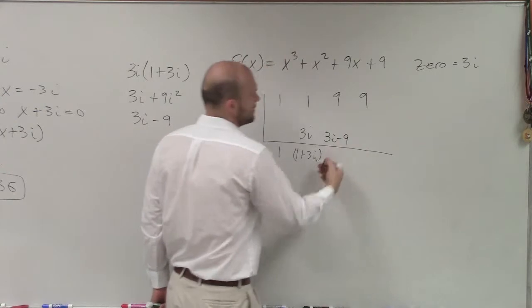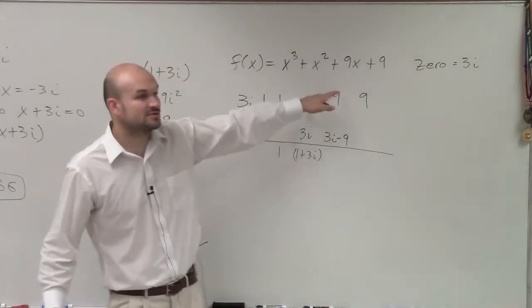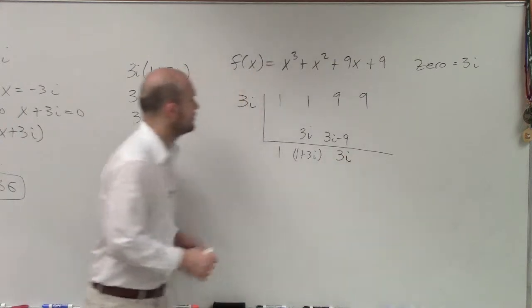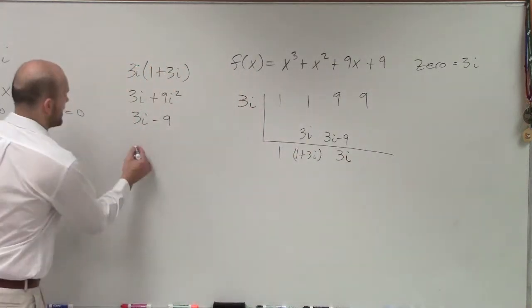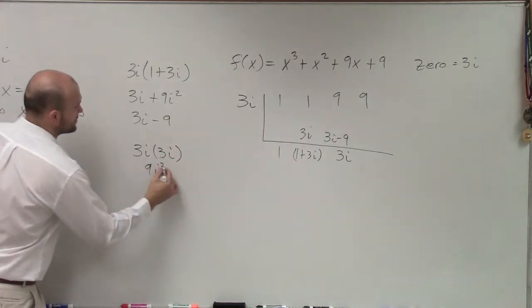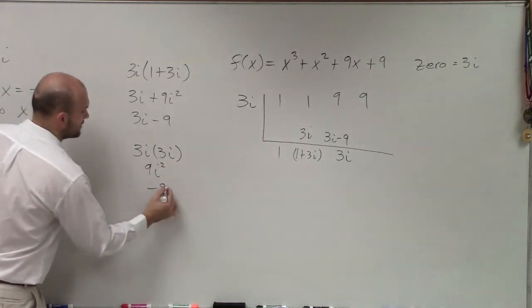3i minus 9 plus 9 is now just going to be 3i. 3i times 3i is going to be 9i squared, which equals to negative 9.